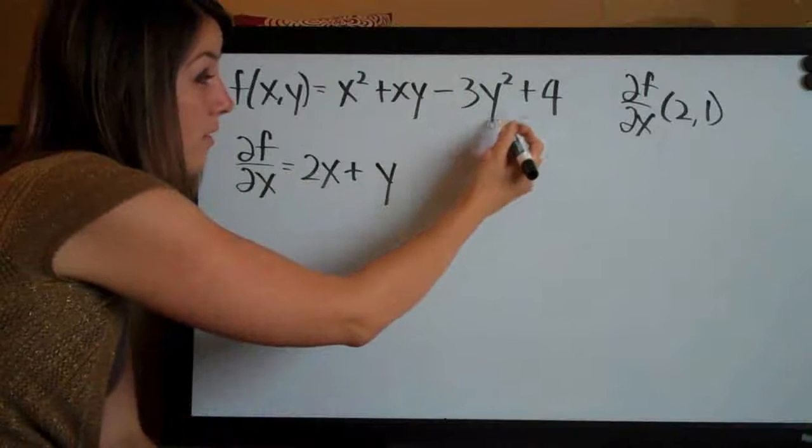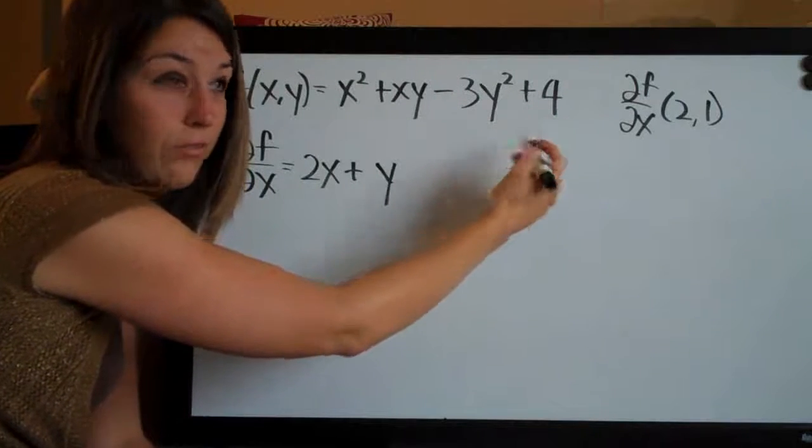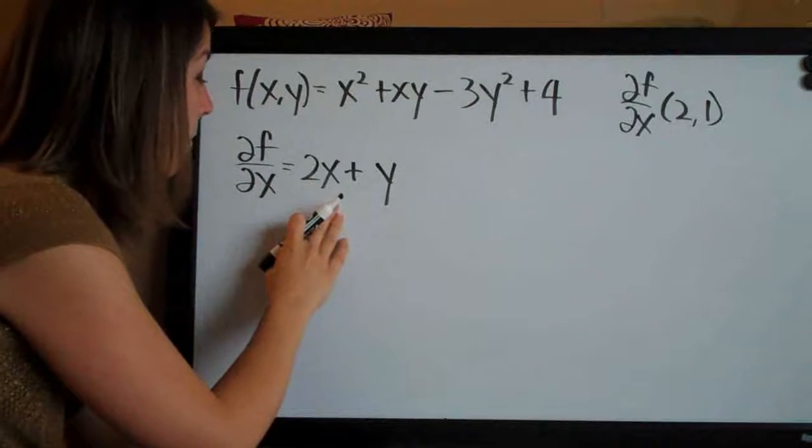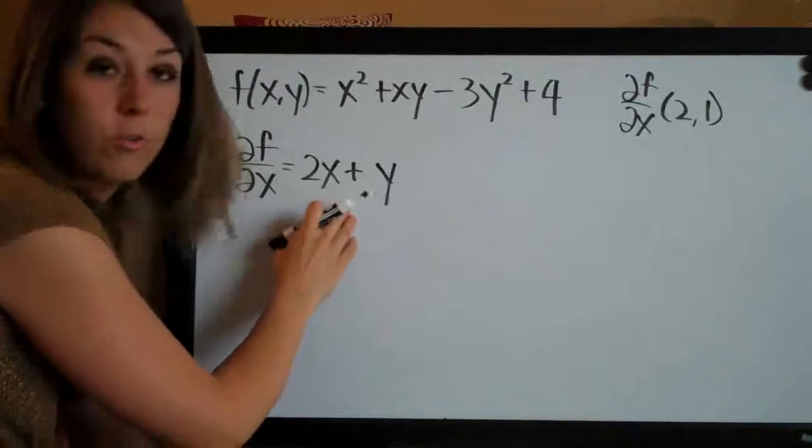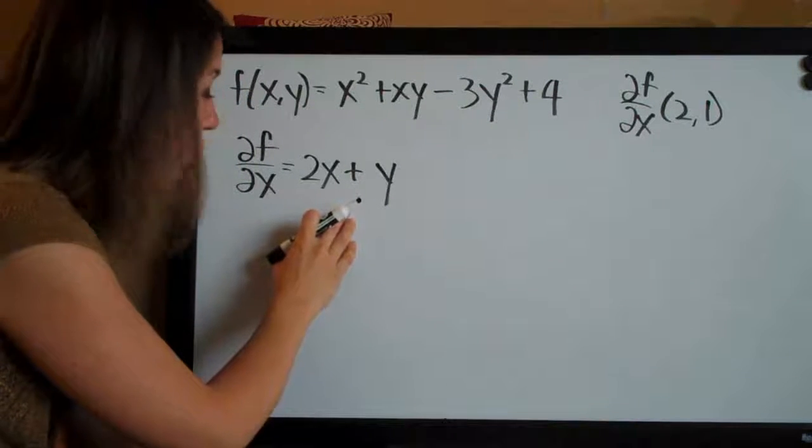So this is going to be 0 and of course this is going to be 0 because there's no variables involved at all. So this ends up being our entire first order partial derivative with respect to x, 2x plus y.